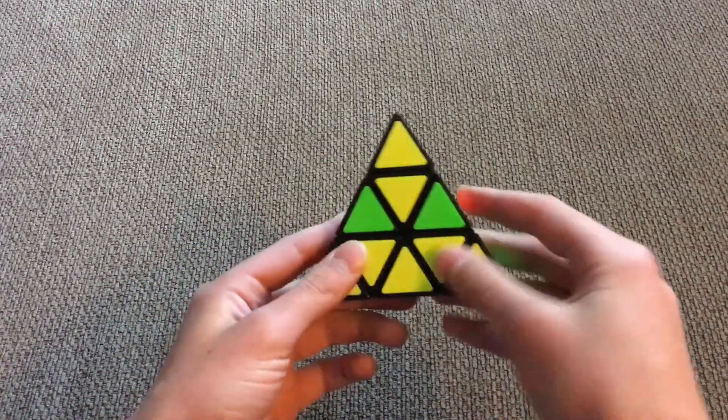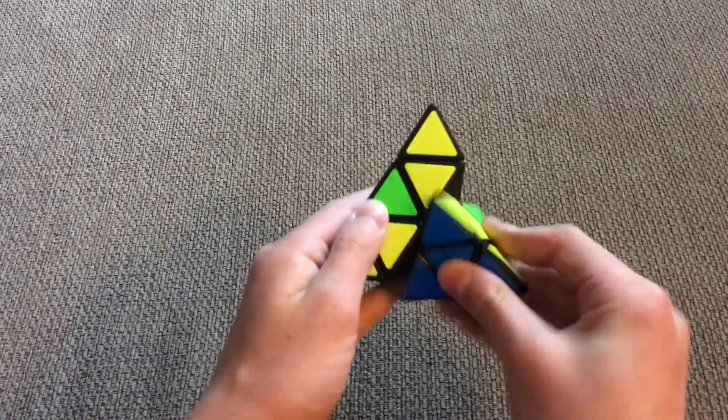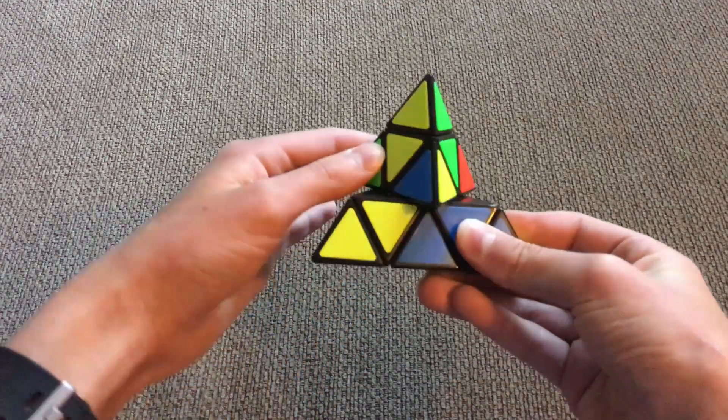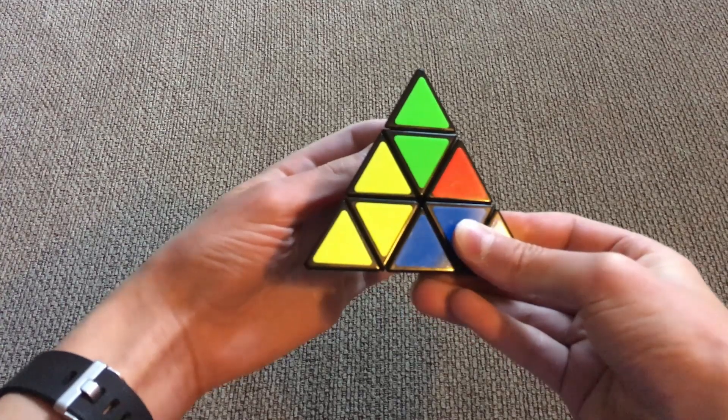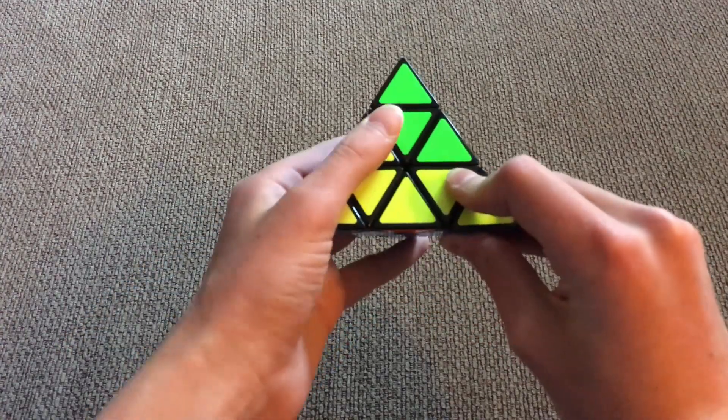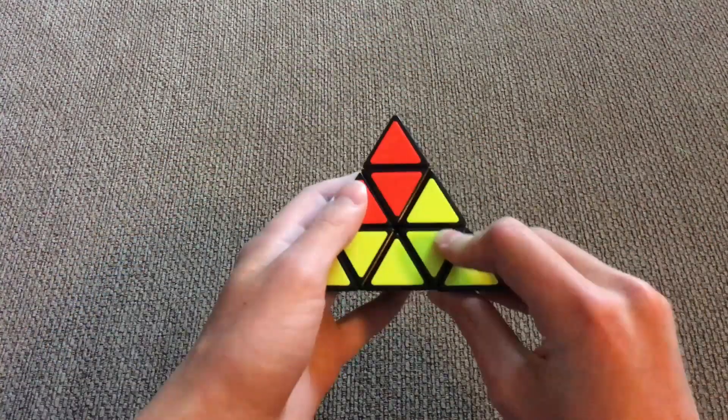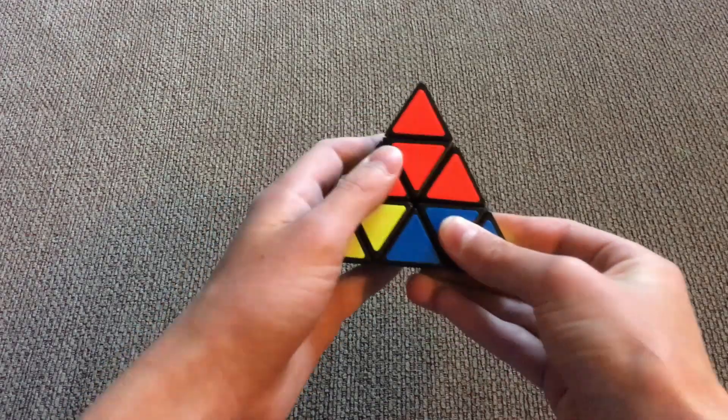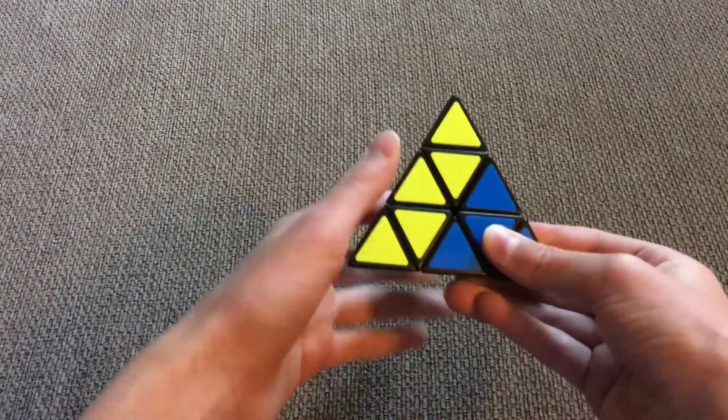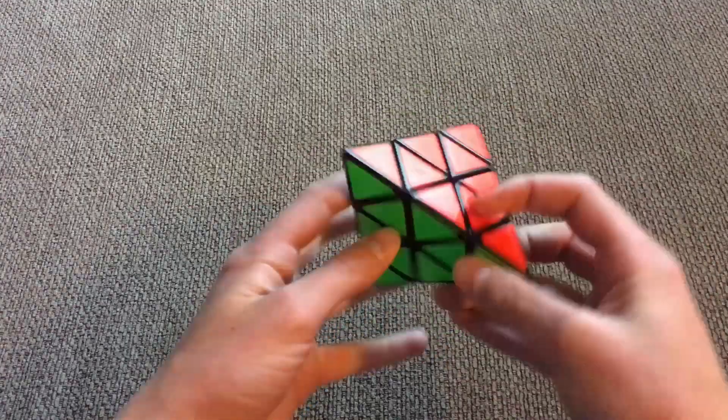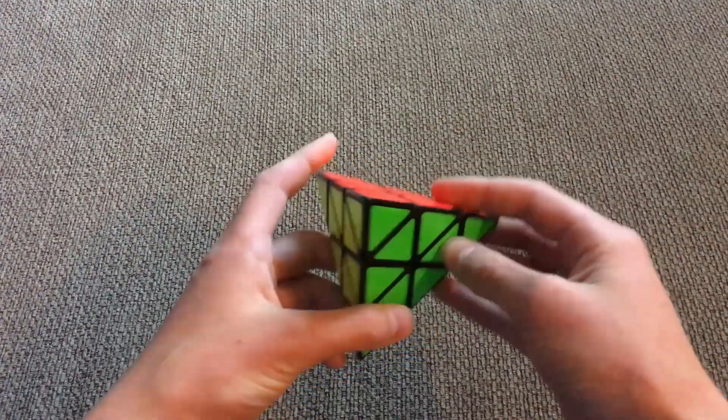Then you turn it back, and you lift up the right, turn the top once to the right, bring down the right, turn the top to the right again, bring the right up again, turn the top right, and bring the right down. And there you go, your pyramids is solved.